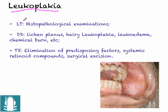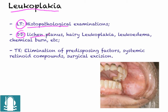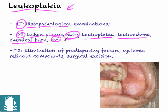For lab tests, we usually perform histopathological examinations; however, it is usually not necessary and you can diagnose the patient clinically. The differential diagnosis is complex because there are several types of white lesions. These include lichen planus, hairy leukoplakia, leukoedema, chemical burns, and others.